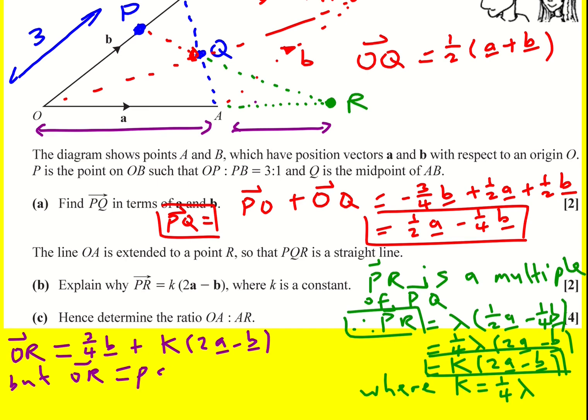But when I did it, I introduced a little sort of ρ. I said it's ρ times a. Since OAR is a straight line, that means I can create an equation.